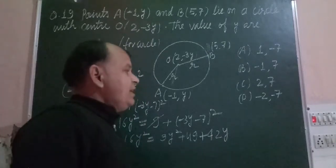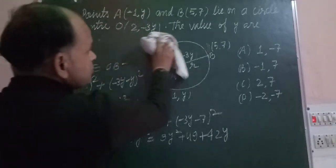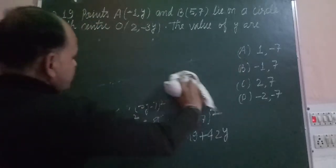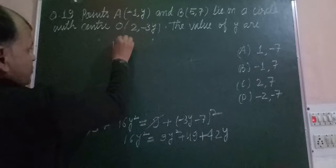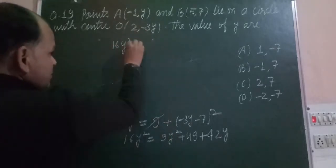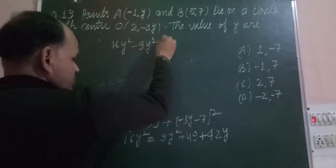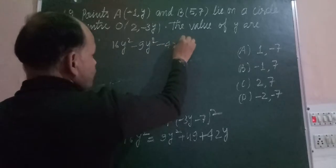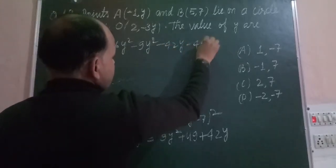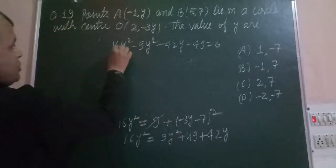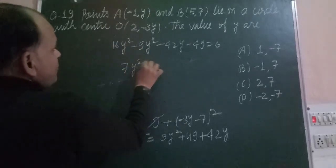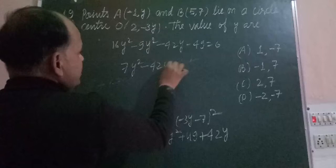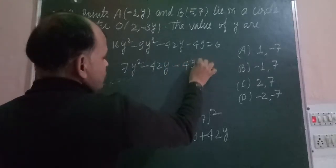We get a quadratic equation. Solving it to find the value of Y: 16Y² minus 9Y² minus 42Y minus 49 equals 0. So 16 minus 9 is 7Y², giving us 7Y² - 42Y - 49 = 0.